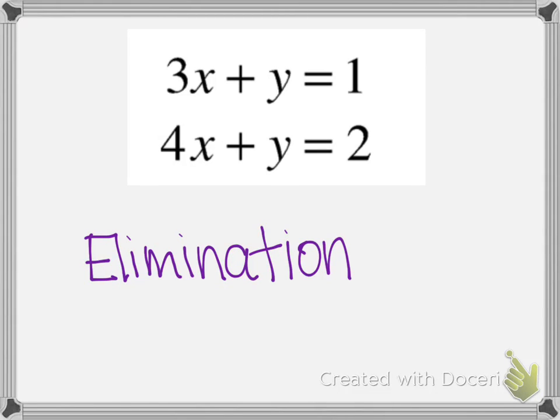In this question, the elimination method would be the most efficient way to solve it. The reason you can see is that the x's and the y's are nicely lined up in both equations. And so all we would have to do is multiply one of the two equations by a negative.